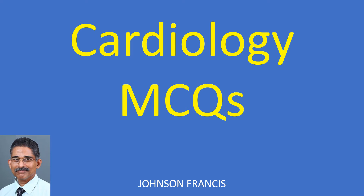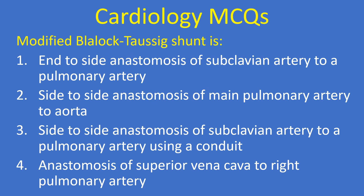Discussion of Cardiology multiple choice questions. Modified Blalock-Taussig Shunt is option 1: end-to-side anastomosis of subclavian artery to a pulmonary artery. Option 2: side-to-side anastomosis of main pulmonary artery to the aorta. Option 3: side-to-side anastomosis of subclavian artery to a pulmonary artery using a conduit. Option 4: anastomosis of superior vena cava to right pulmonary artery.